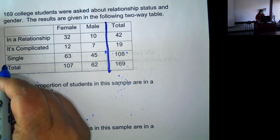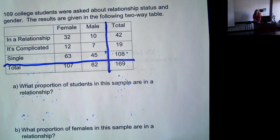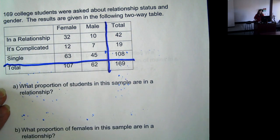And we want to make sure we don't include total in the table. So we have two variables here, the gender and the relationship status.